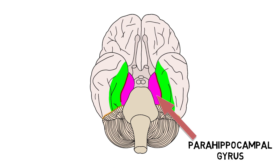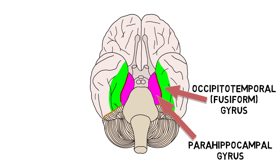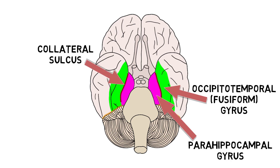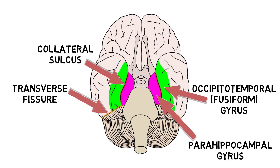The parahippocampal gyrus lies immediately adjacent to and partially surrounds the hippocampus and is thought to play a role in memory processes. The occipitotemporal, or fusiform gyrus, extends from the temporal lobe toward the occipital lobe and is thought to play a role in high-level visual processing, such as in the recognition of faces, objects, and written words. A sulcus called the collateral sulcus separates the fusiform gyrus from the parahippocampal gyrus. A sulcus called the transverse fissure separates the cerebellum from the rest of the brain.